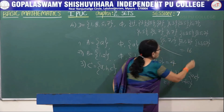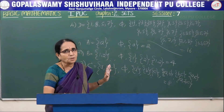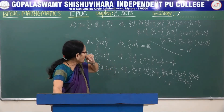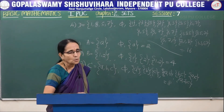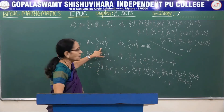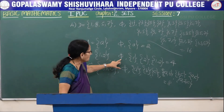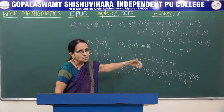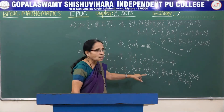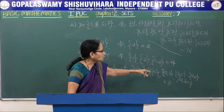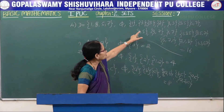So we have sixteen subsets for a four-element set. Observe the pattern: one element gives 2 subsets, two elements gives 4, three elements gives 8, and four elements gives 16. These numbers are 2¹, 2², 2³, and 2⁴ respectively. The index in each case equals the number of elements in the set. For one element: 2 to the power 1; two elements: 2 to the power 2; three elements: 2 to the power 3; four elements: 2 to the power 4.